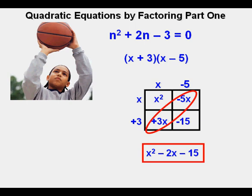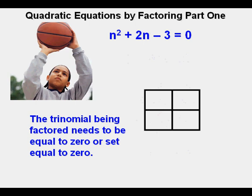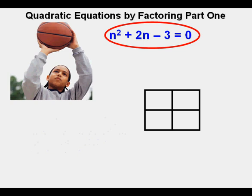Factoring is working backwards from finding the product by multiplying. In other words, we start with a trinomial, or maybe even a quadratic binomial, and find the factors of that product. The equation has to be equal to zero on one side to solve by factoring. If one side does not equal zero, we need to make it zero. Now for this first problem, we'll start with the trinomial n squared plus 2n minus 3, which is already set equal to zero.